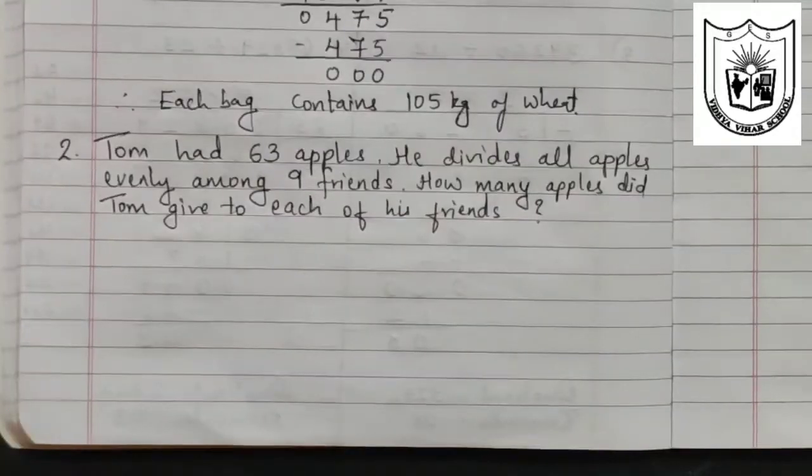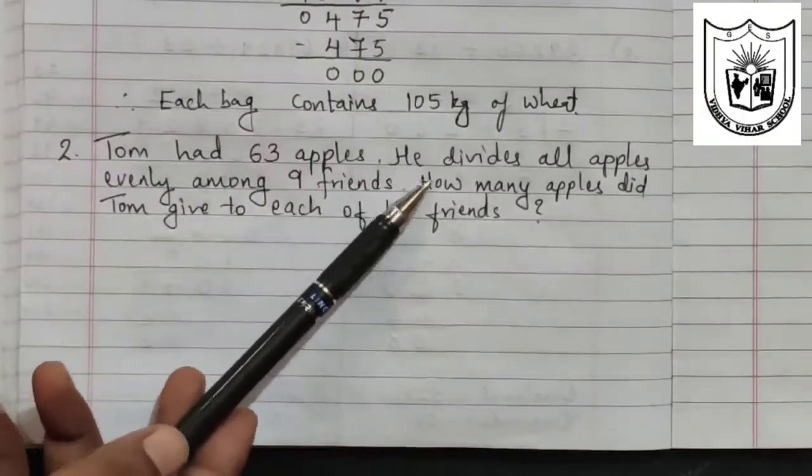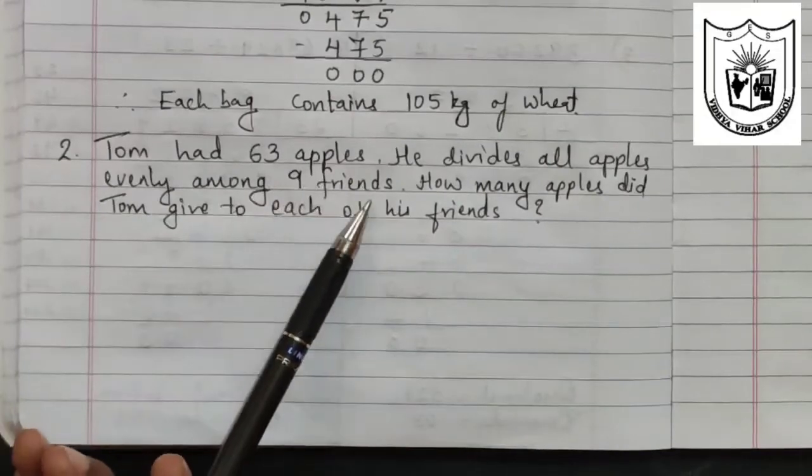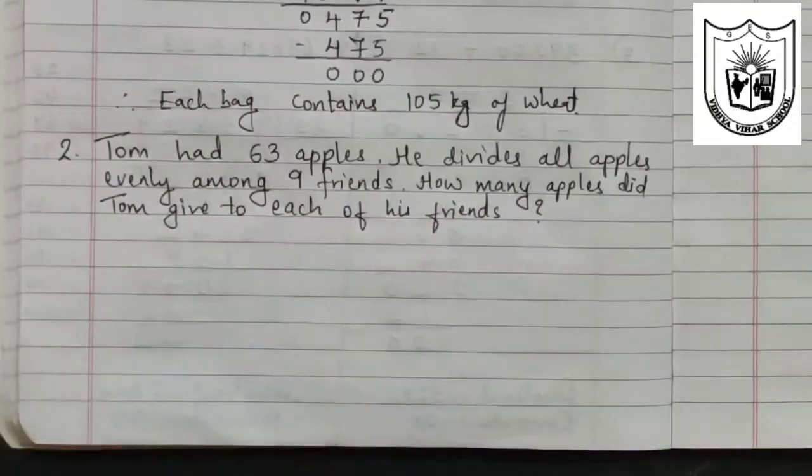Let us solve the second problem. Tom had 63 apples. He divides all apples evenly among 9 friends. How many apples did Tom give to each of his friends? Okay, let us calculate.